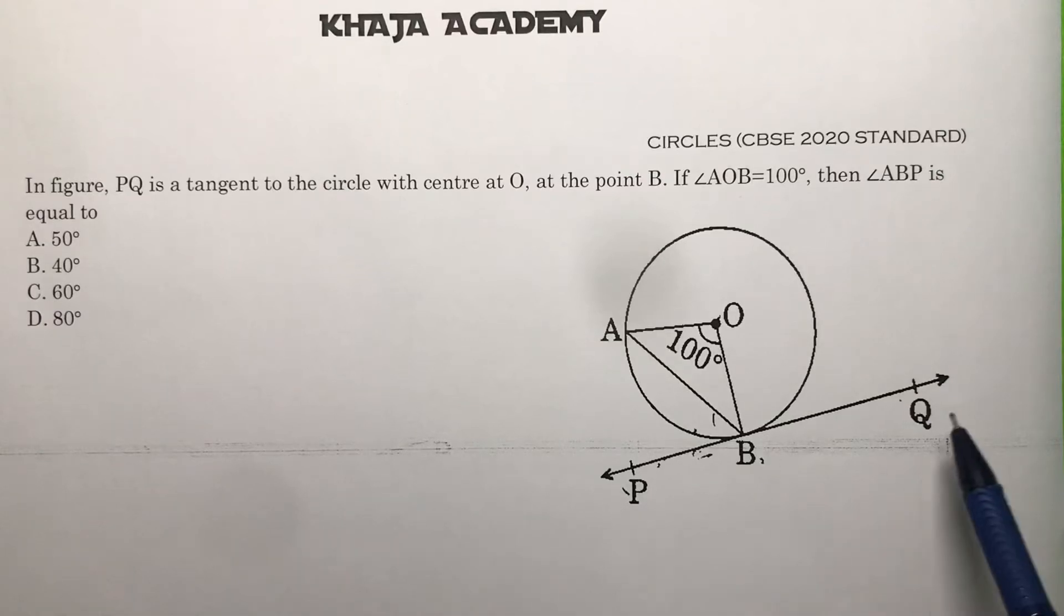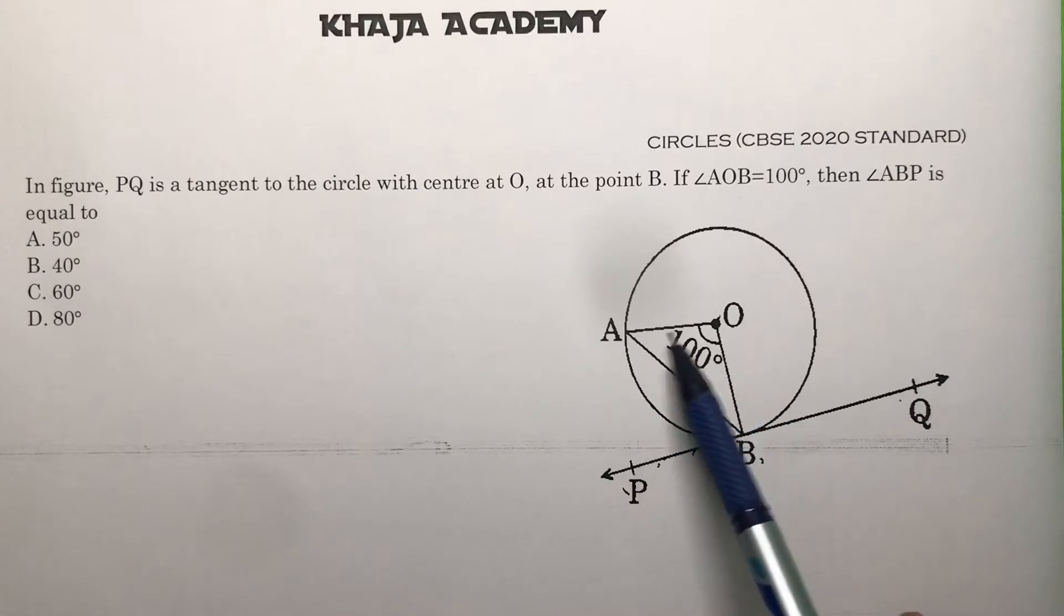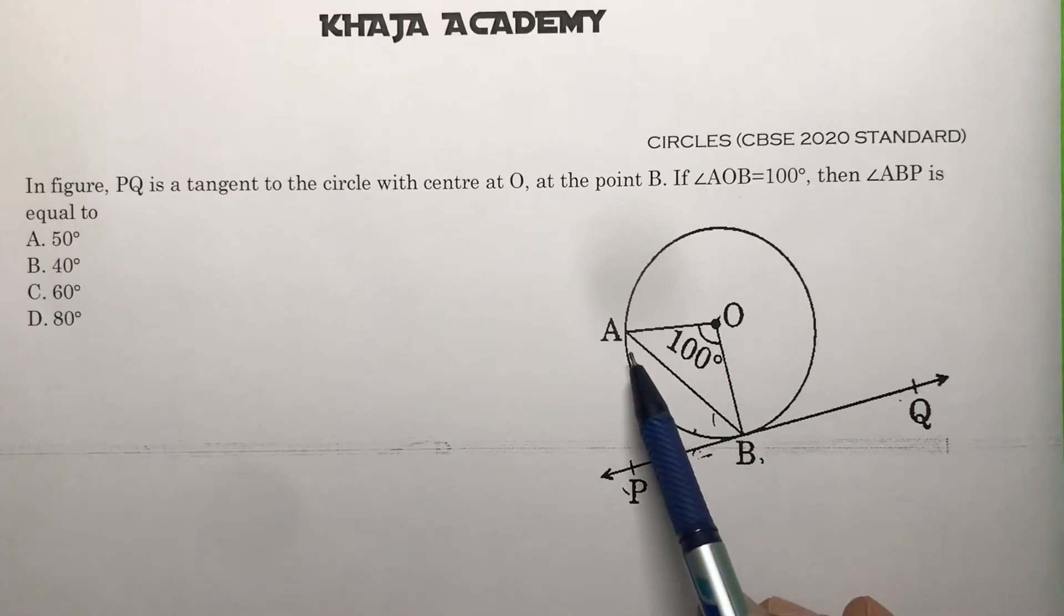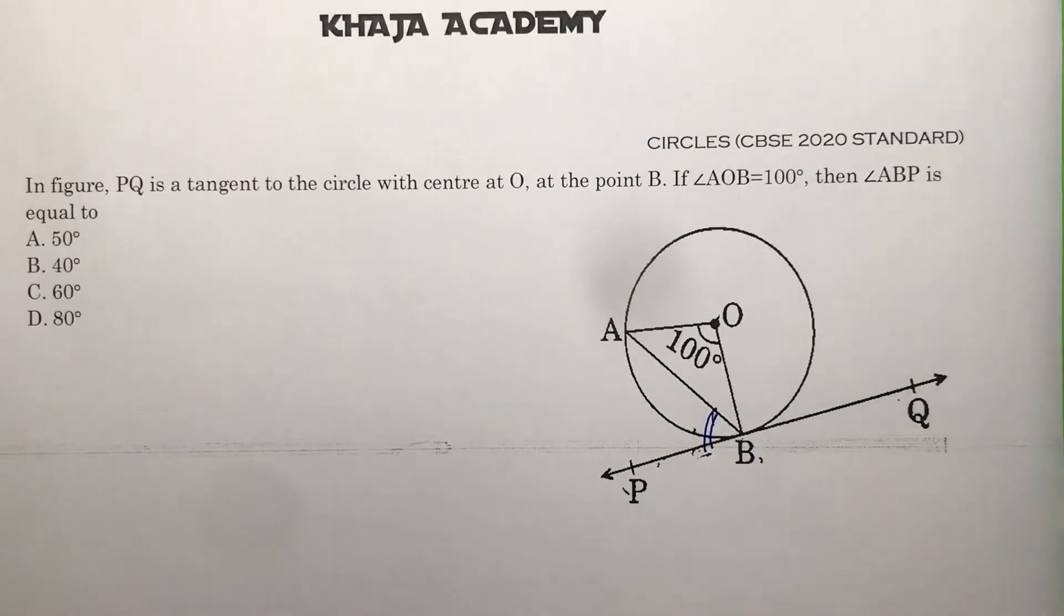In the figure, PQ is a tangent to the circle with center O at point B. If angle AOB is 100 degrees, we need to find angle ABP.